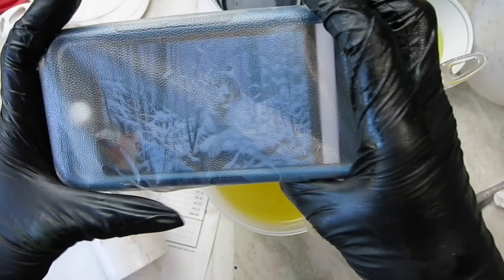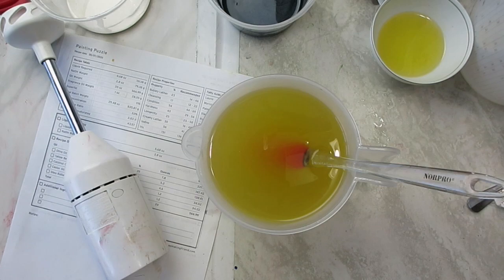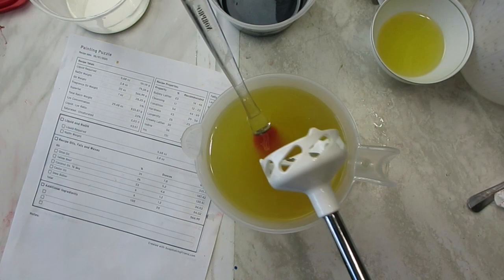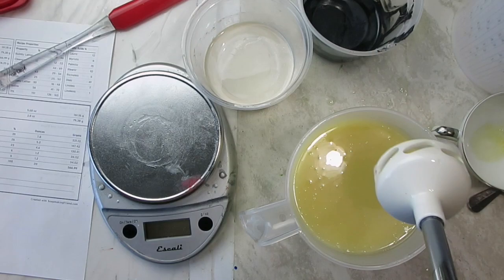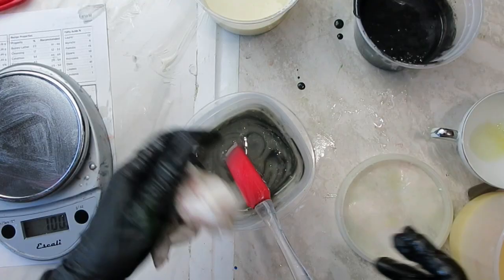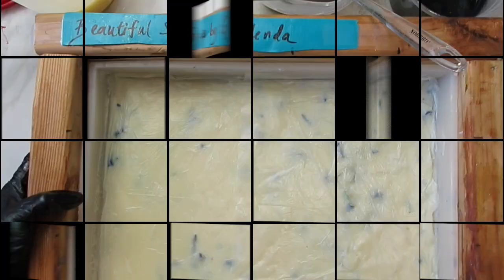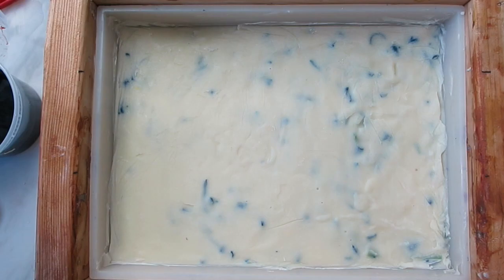I separated 8 ounces for the white and then 4 ounces of soap batter to be colored black, and then an additional small amount which had the uncolored soap batter with a little bit of the black to create just a medium gray color.